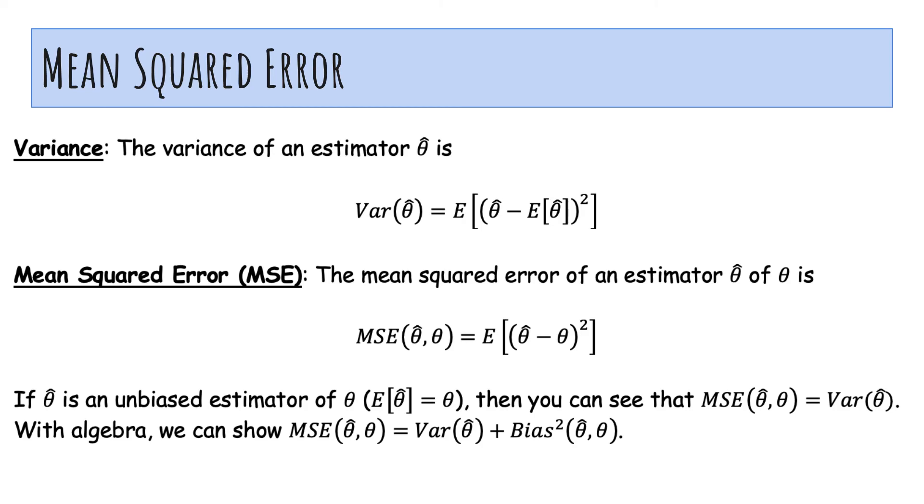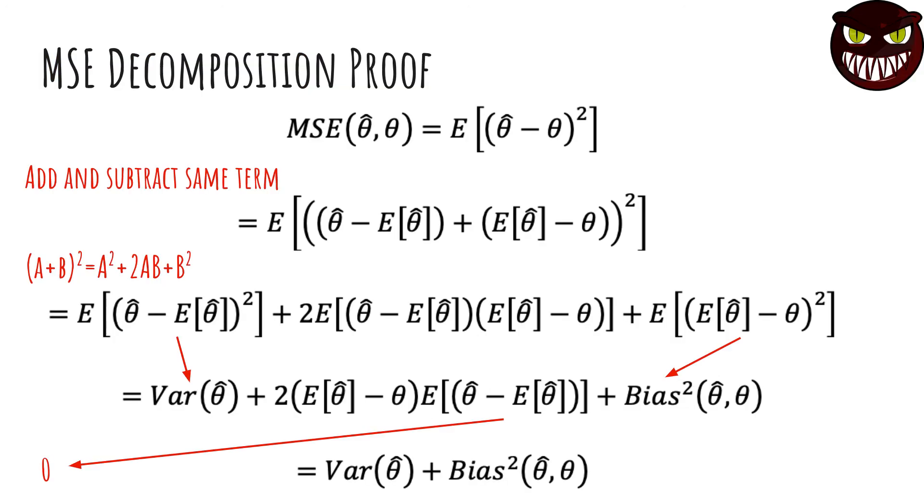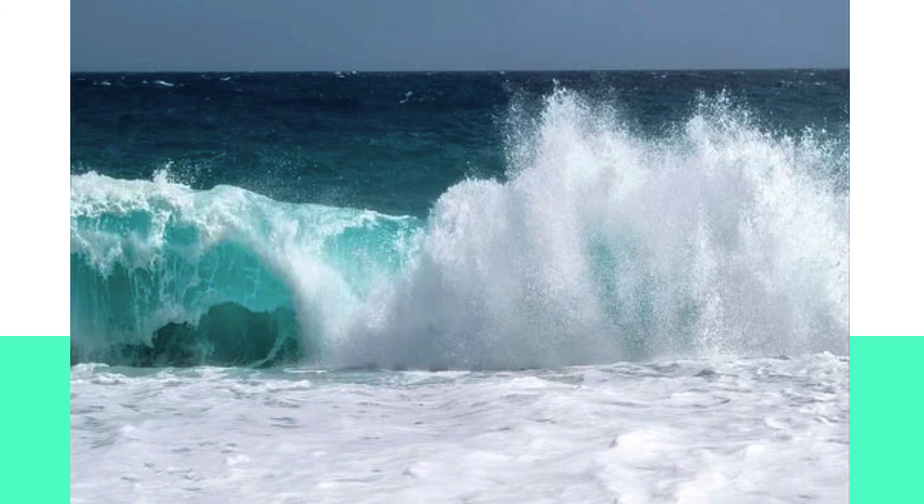But so we said, we want accuracy. We want our estimators to be on the dot, which is unbiasedness. And we want mean squared error to be low. We want this squared deviation to be low, which involves minimizing both variance and the bias. And so you can see that we want to have low MSE and low variance in general. Okay, so here's the proof. It's not too bad. It kind of looks messy, but there's only a few lines to prove this. And yeah, those are the first few metrics we're going to use to evaluate our estimators.